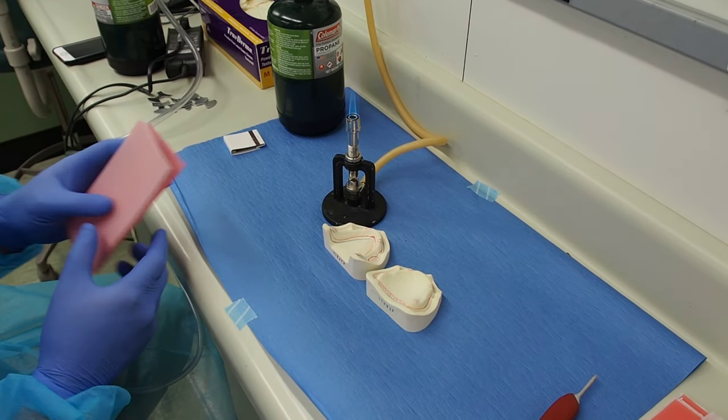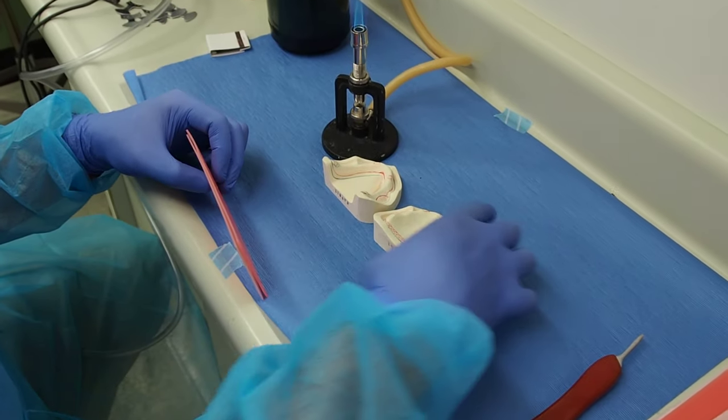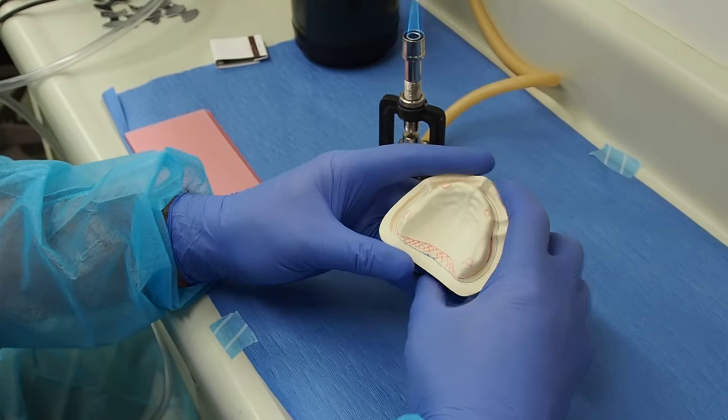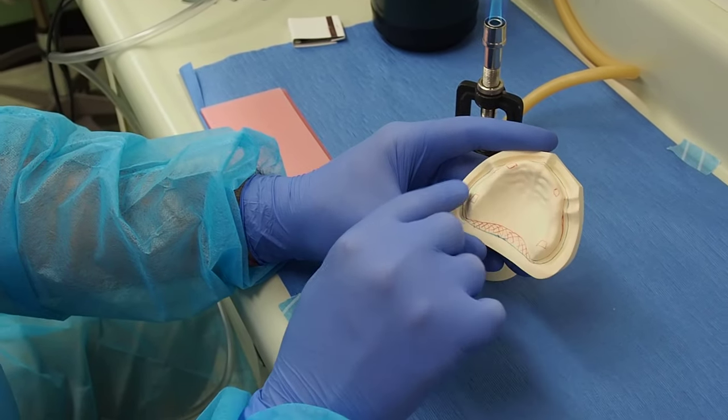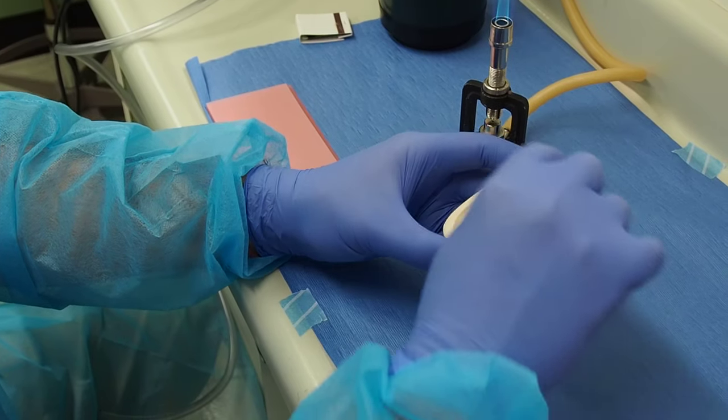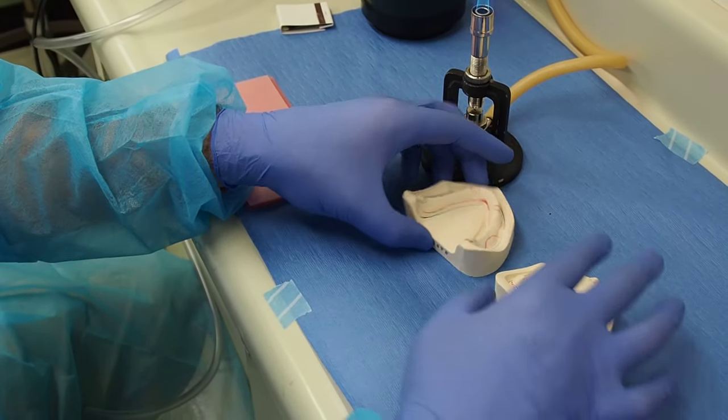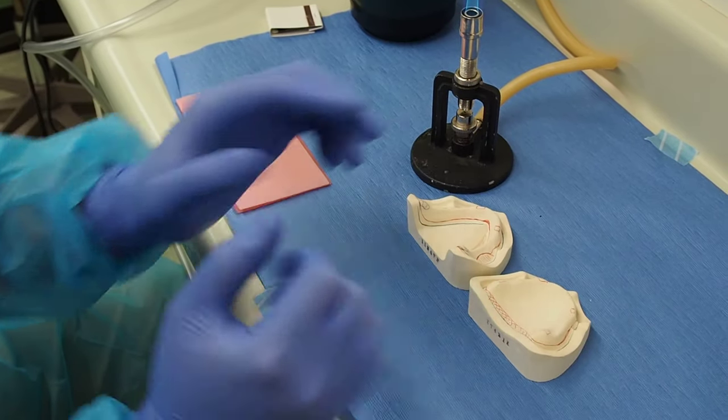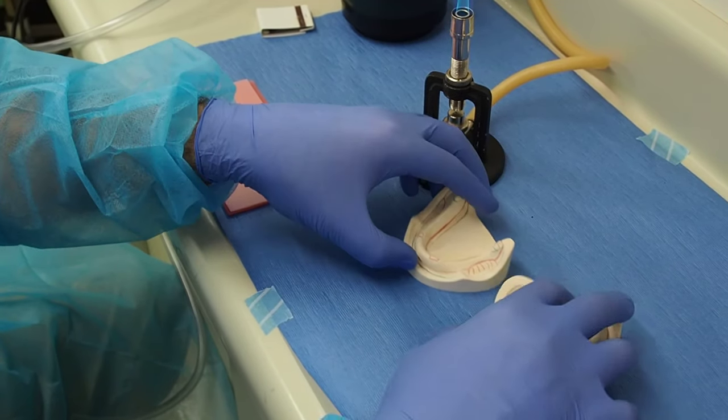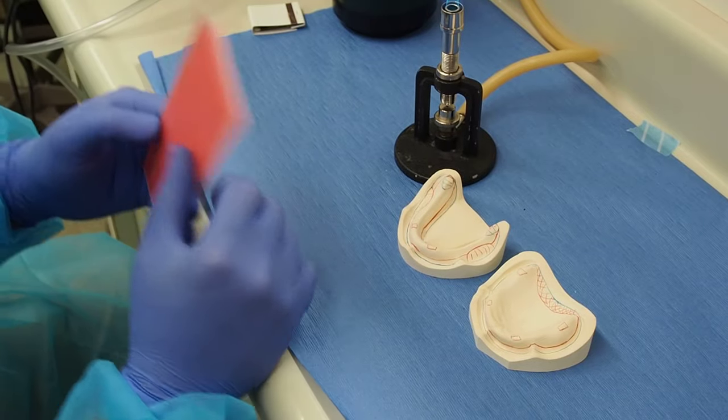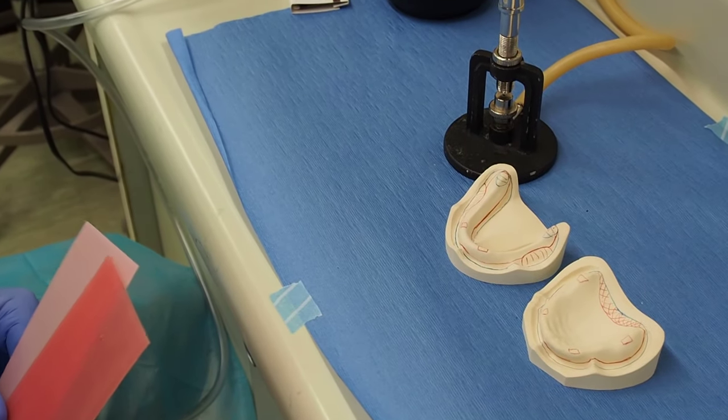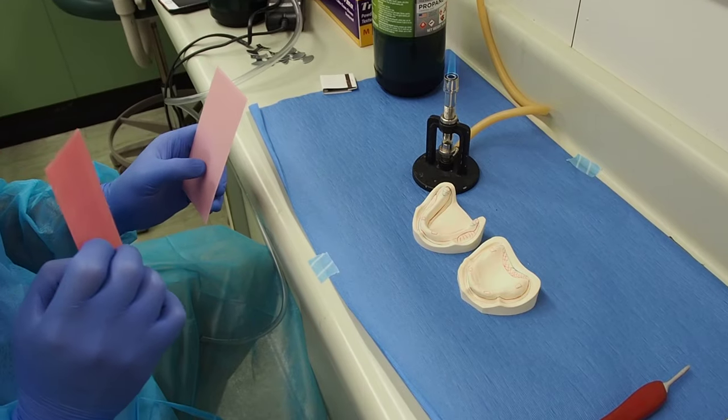Okay, this is the second part of the video right after we finished up marking everything - the deepest part of the vestibule and my wax relief on both sides. Now we're gonna actually make the wax relief. For the wax relief we'll need a soft wax.